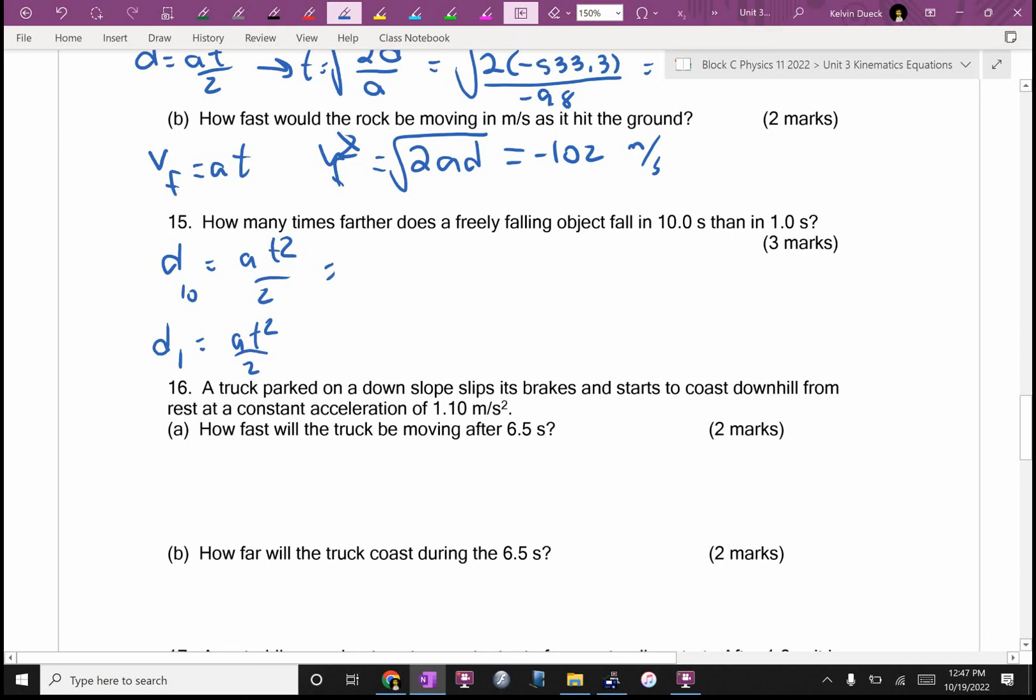I'm going to find the distance it falls in 10 seconds, and the distance it falls in one second. And you know what I'm going to do with those two answers? Divide them. It's going to be AT squared over 2 and AT squared over 2 because VI is 0. It's going to be negative 9.8 times 10 squared over 2. Negative 490. And negative 9.8 times 1 squared over 2. Negative 4.9. And then I think when you divide them, it's 100 times bigger.